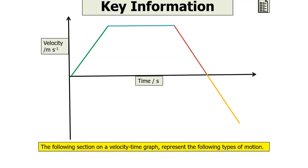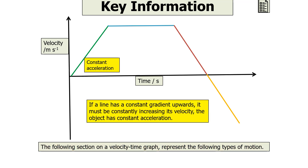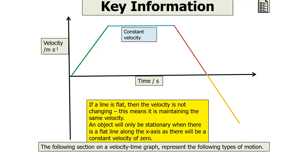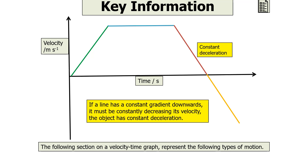Here is an example of a velocity time graph. The first section represents constant acceleration — a line with a constant gradient upwards means the object is constantly increasing its velocity. The blue section is constant velocity, because if the line is flat, the velocity is not changing. An object will only be stationary when there is a flat line along the x-axis, as it will have a constant velocity of zero. The red section shows constant deceleration, because a line with a constant gradient downwards means the object is constantly decreasing its velocity.